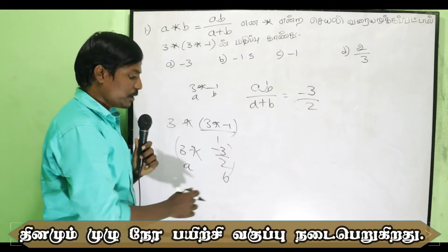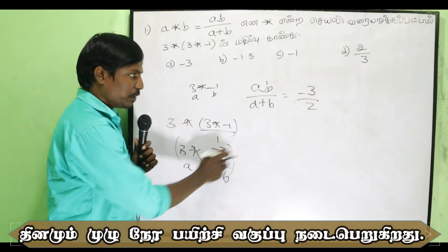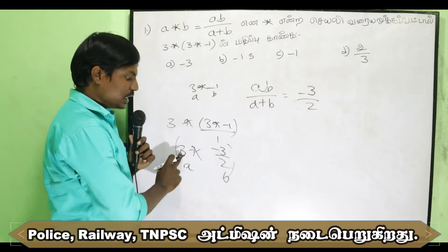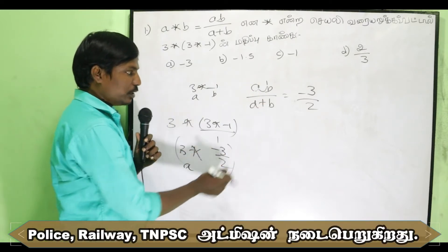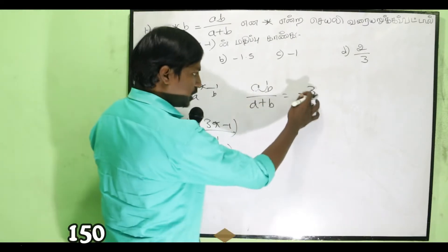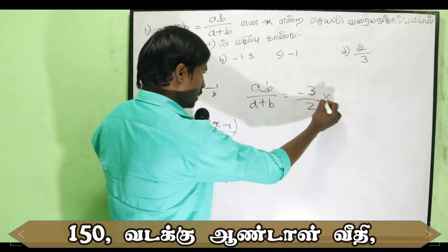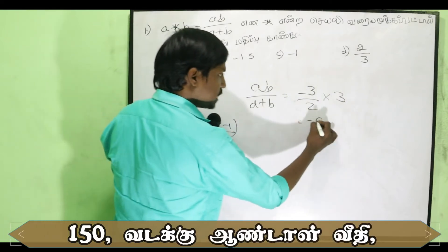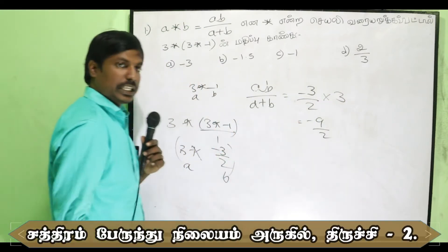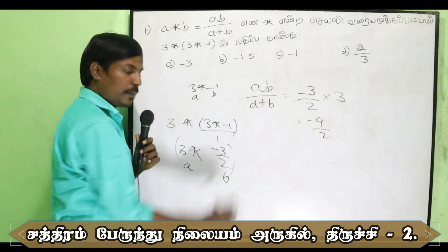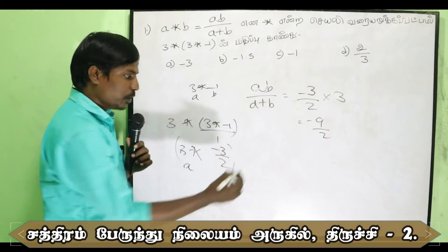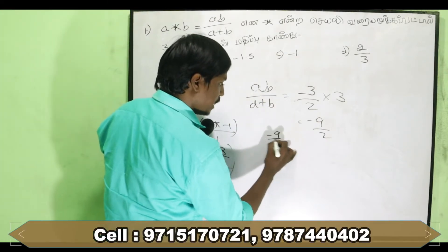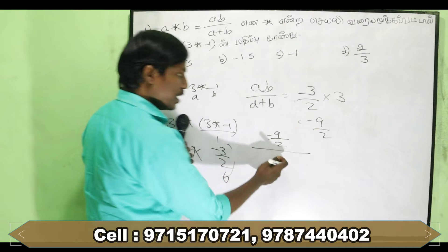Now applying the formula ab divided by a plus b: a is 3, b is minus 3 by 2. So a times b equals 3 into minus 3 by 2, which gives us minus 9 by 2. That is the numerator: minus 9 by 2.